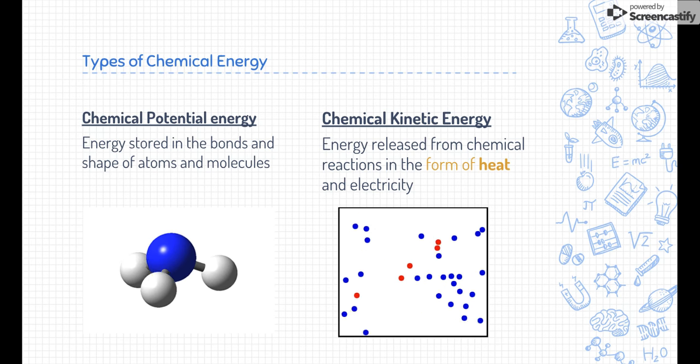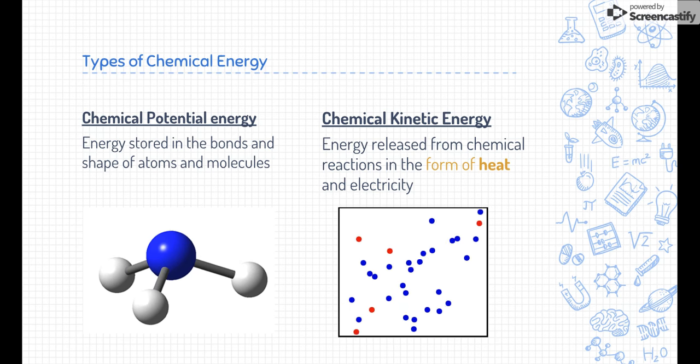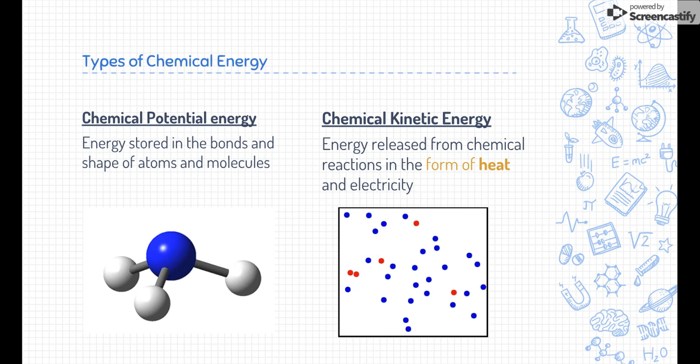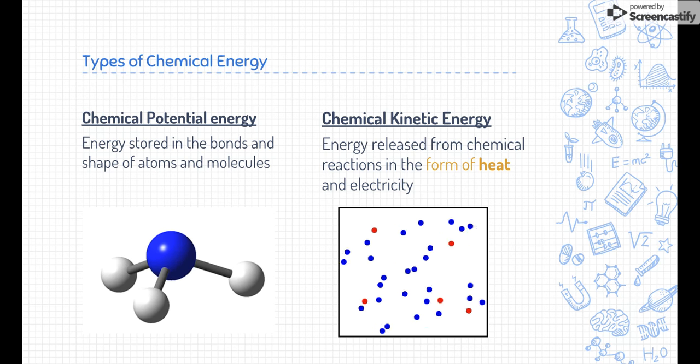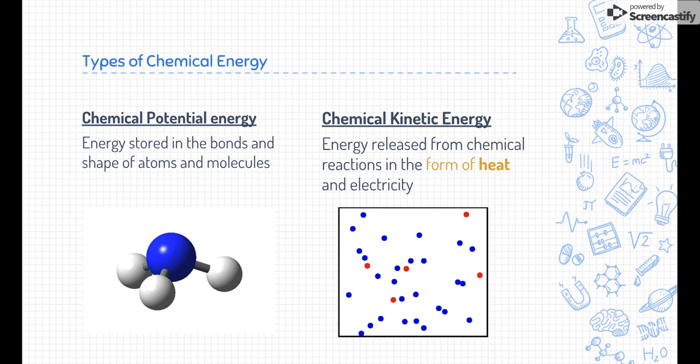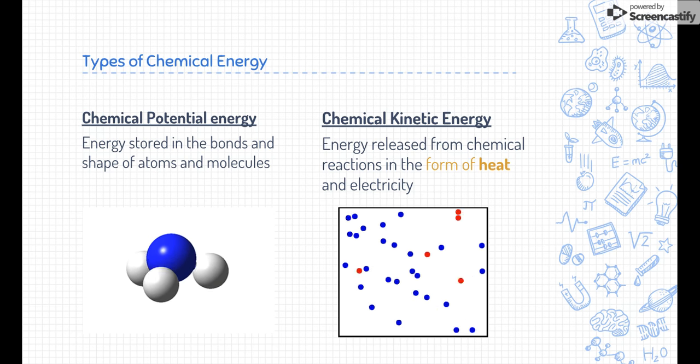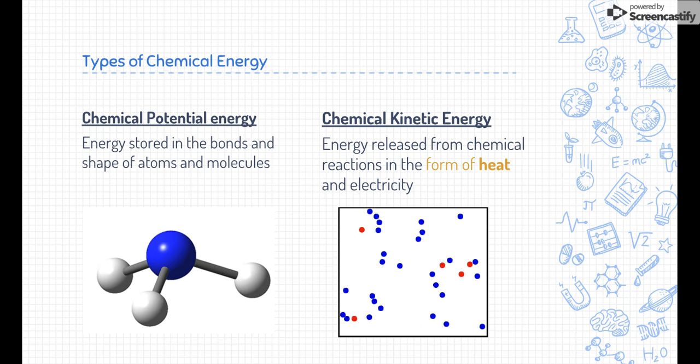The other type of energy is chemical kinetic energy. It's energy that's released after a chemical reaction has taken place or during a chemical reaction, usually in the form of heat or maybe electricity. In that analogy, if we take our dynamite and actually use it or explode it, all of the energy released in the form of heat is the kinetic energy.